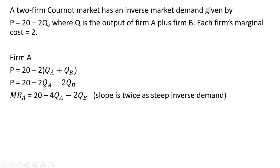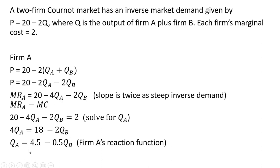So instead of 2Q subscript A, we get 4Q subscript A. We're going to set marginal revenue equal to marginal cost to maximize profit, and we're going to solve this for Firm A's output. So moving some things around and dividing by 4. This is what is referred to as Firm A's reaction function.